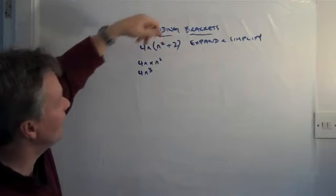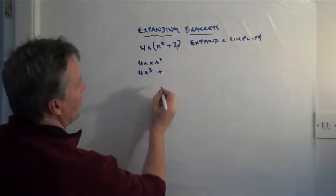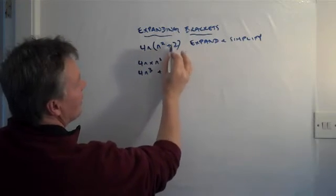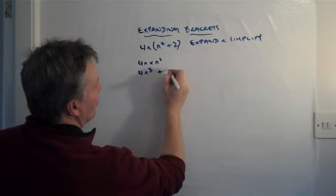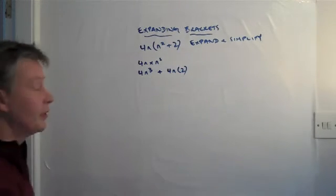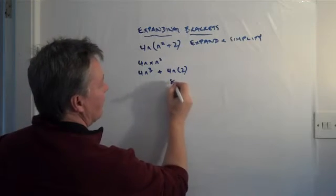So that's that bit. Now we need to deal with this plus 2. So we've got a situation where we're looking to multiply 4n times 2. So we've got 4n multiplied by 2. Well, 2 lots of 4n is 8n.